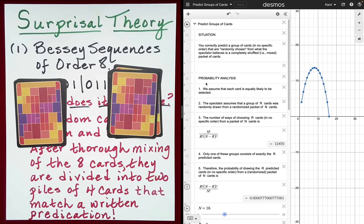The number of ways of choosing R cards, that is four cards, from a packet of N cards, that is eight cards, is found by performing the following calculation: N factorial divided by R factorial times N minus R factorial.